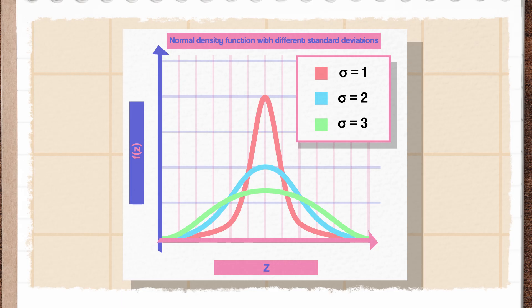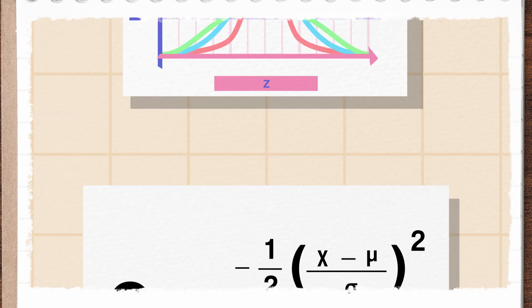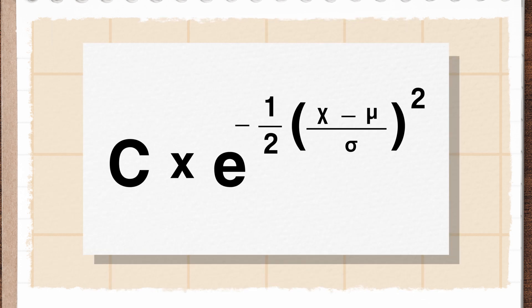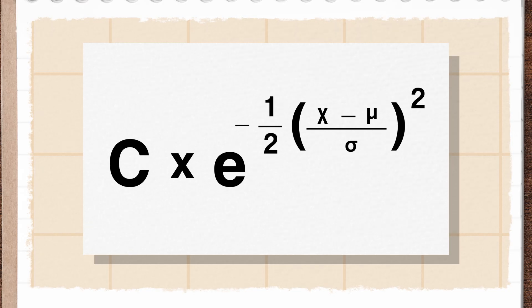A small value would mean small deviations from the mean, while a large value indicates larger deviations. Finally, this whole thing is multiplied out by a constant, which we'll call c. This number represents the maximum height the curve reaches on the vertical axis.